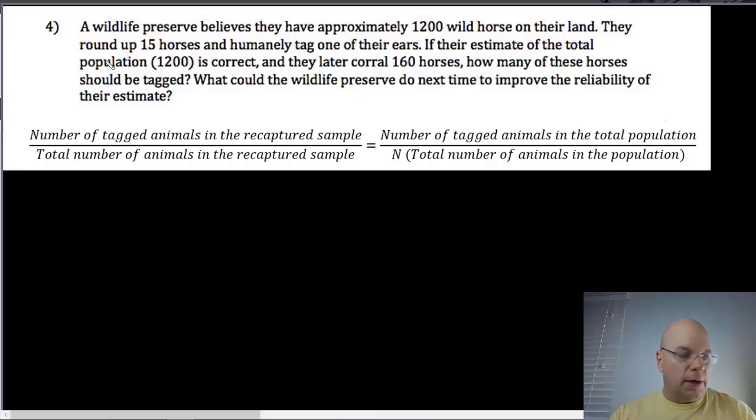Number four is the hardest problem on your homework because it's not the standard problem where you tag a certain number of animals, and then you recapture and count the number of tagged to the total number of animals in the recaptured sample, and you use those numbers to try to figure out the total number of animals in the population.